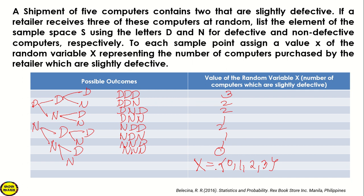So these are the possible values of random variable X — the number of computers which are slightly defective. The retailer could receive zero defective computers out of the three, or one, two, or three defective ones. So that's it, thank you.